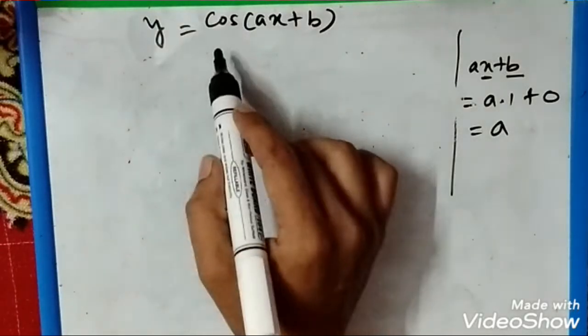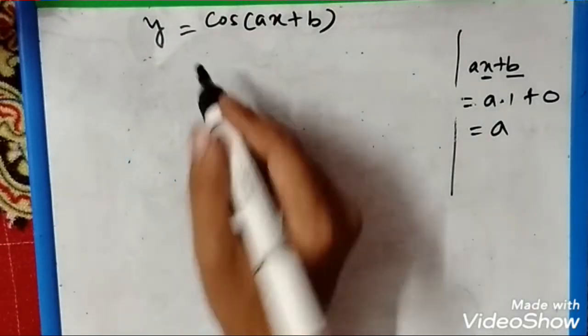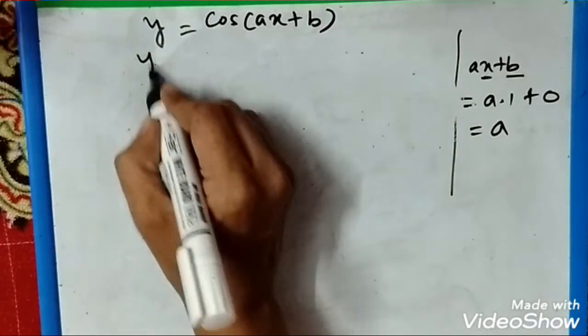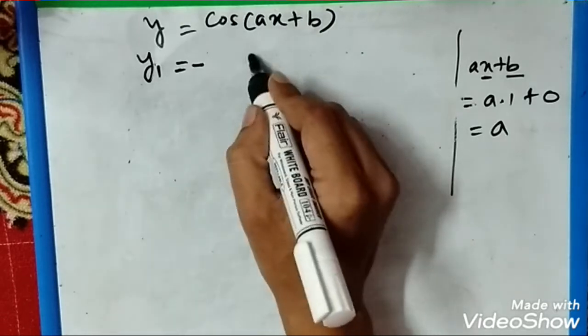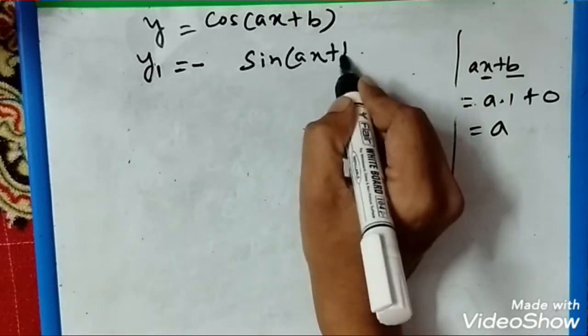Today we are going to see the nth derivative of y equals cos(ax + b). First we will differentiate: y1 will equal the derivative of cos, which is -sin(ax + b).